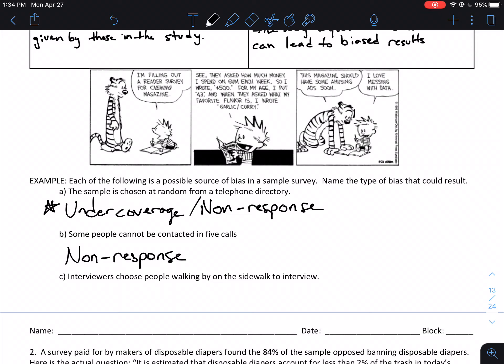All right. For C, interviewers choose people walking by on the sidewalk to interview. So in this case, you're only interviewing the people that are walking by on the sidewalk. You're not necessarily interviewing anyone that's driving by or riding a bike or anything like that. I would see that as being under coverage.